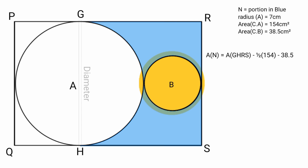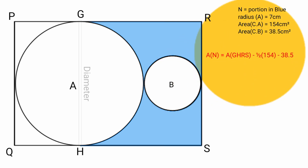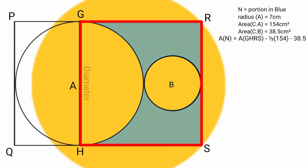Substituting these values: area of N equals area of GHRS minus (1/2)(154) minus 38.5. The only remaining unknown is the area of quadrilateral GHRS.